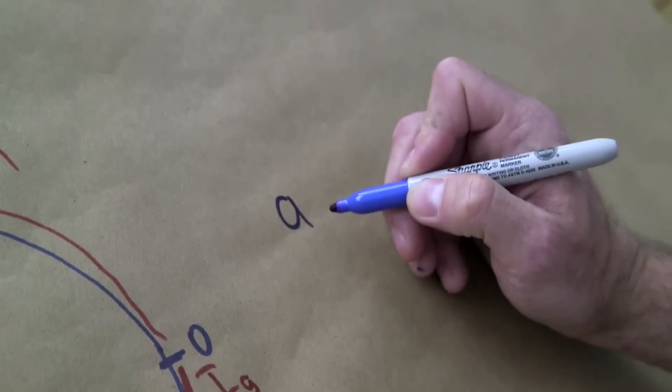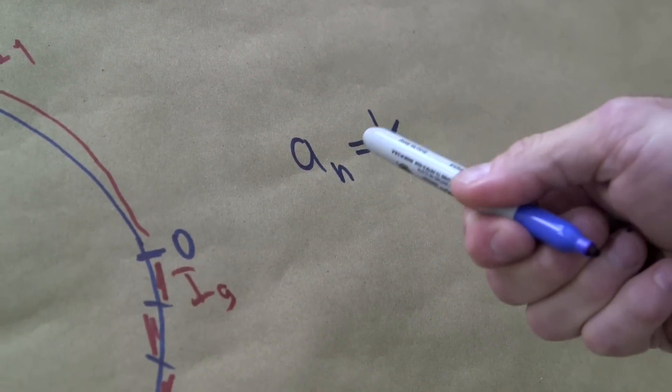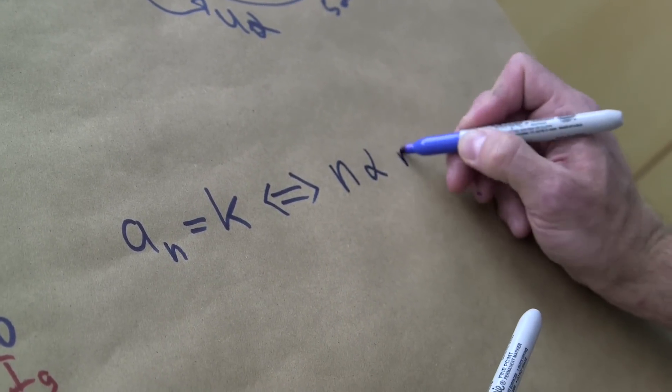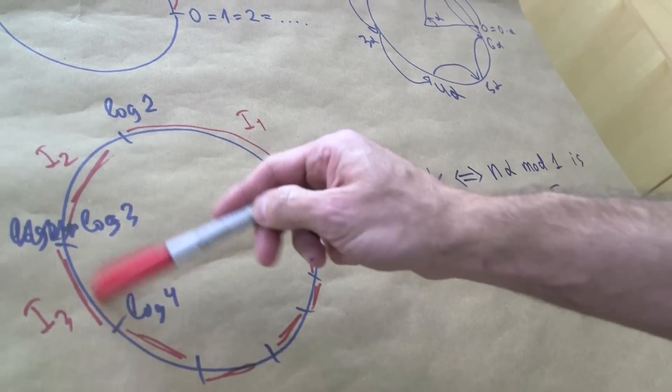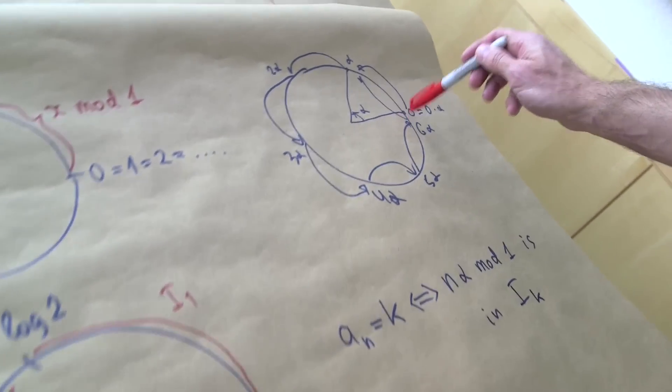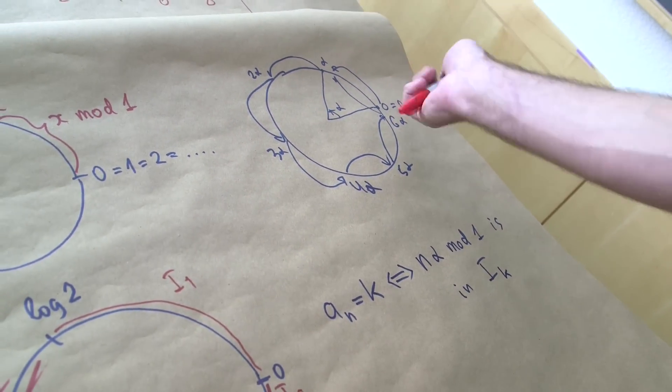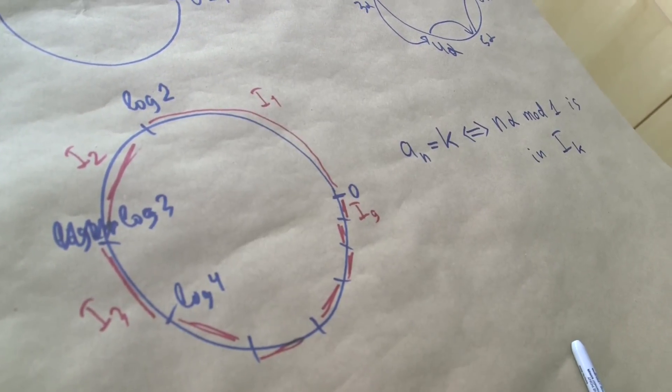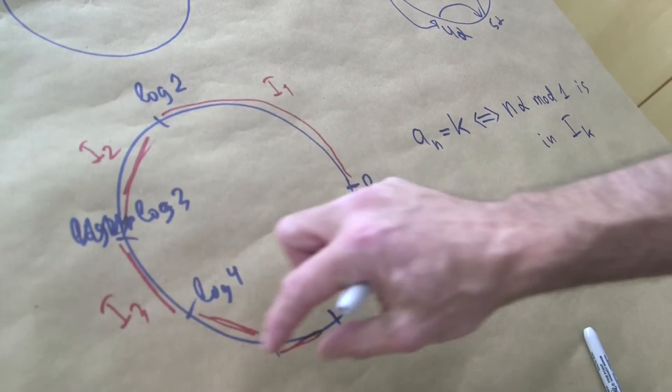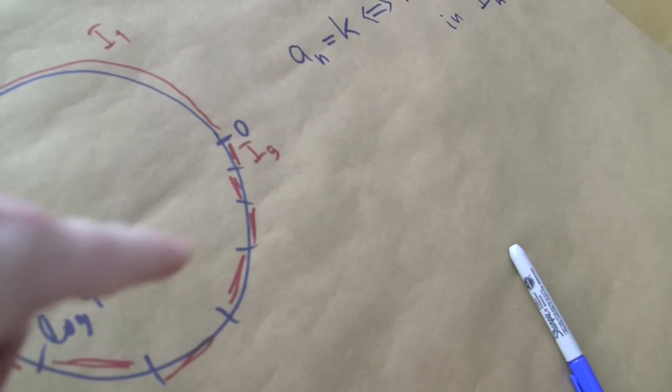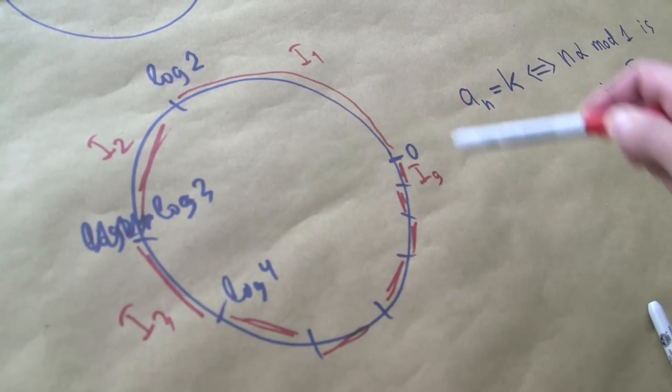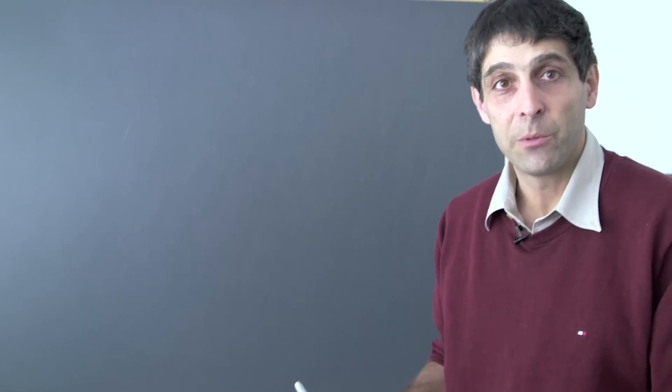Maybe we can call them some names, for example I_1, I_2, I_3 all the way to I_9. What we've said before is that a_n equals k, this is our first digit of 2 to the n, if and only if n alpha mod 1 is in I sub k. So we have this little interval, for example I_3, and we look at this sequence which starting from here we generate a bunch of numbers, and every time we rotate. We are interested in the number of times we hit this interval. We see why this happens because I_1 is the longest one and I_2 is the next longest and so on. These are bigger targets, these are small targets. I_9 is a tiny little target so we hit it less often.